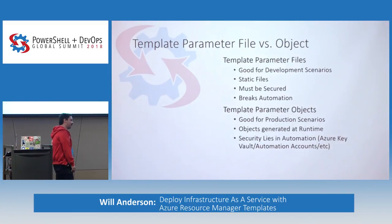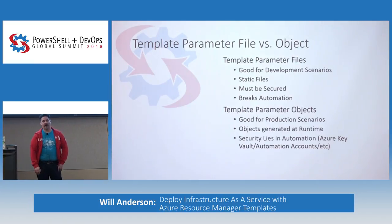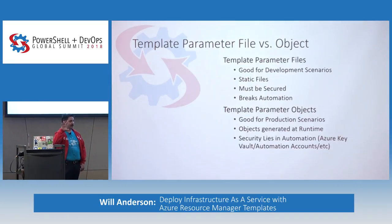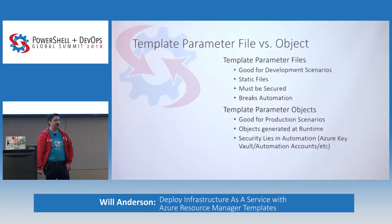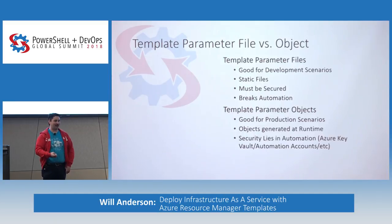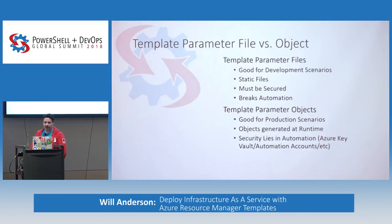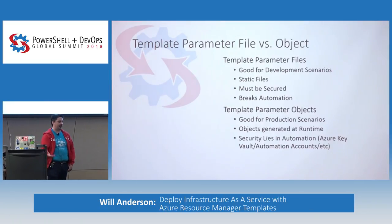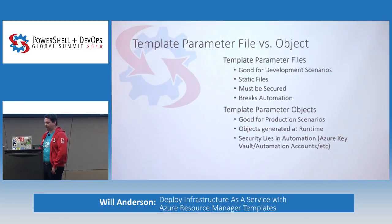Template parameter files versus template parameter objects — this is hugely important. A lot of people use parameters.json files for all their parameter inputs. Number one, you're using a static file, so you've thrown idempotency out the window. Number two, the most common mistake is having credentials in those parameters.json files — username and password in plain text that anyone can read. Adding additional security layers on top of parameter files is a pain: you might have to store it in a blob store, deal with SAS tokens, create constructs to generate those tokens, and then manage them.